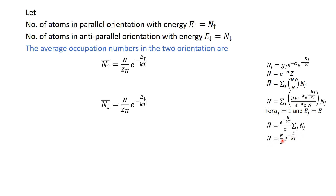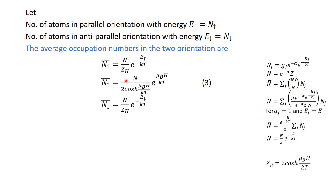For the up state, substituting the up-arrow values gives one equation, and for the down state, substituting the down-arrow values gives another relation. Now putting the value of Z_H into these expressions, we get the corresponding relations for N↑ and N↓.